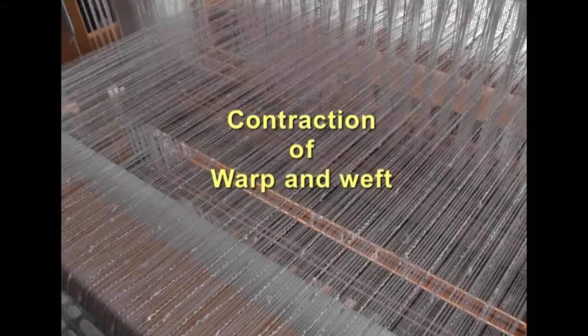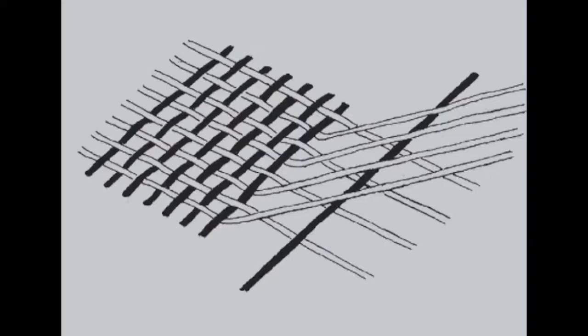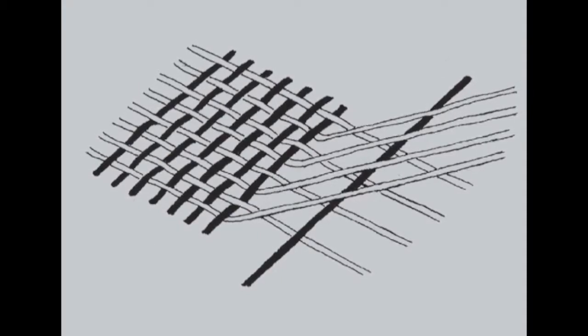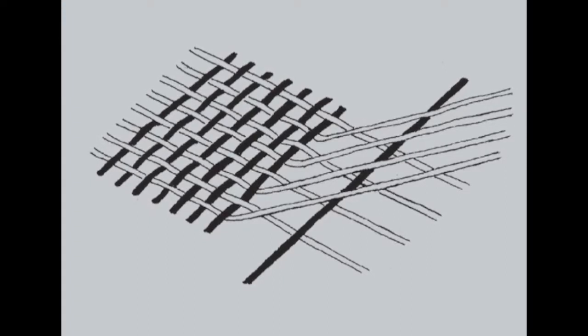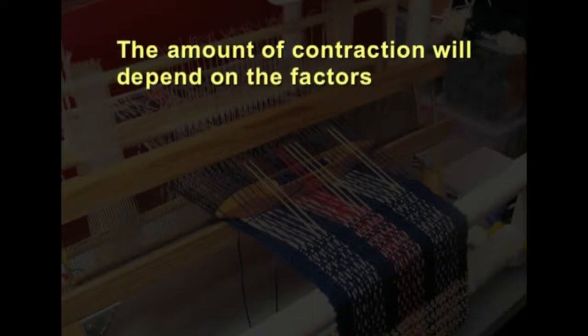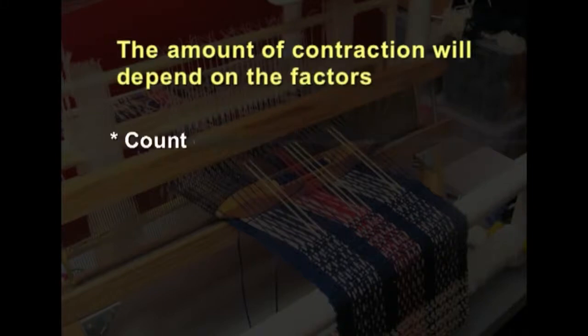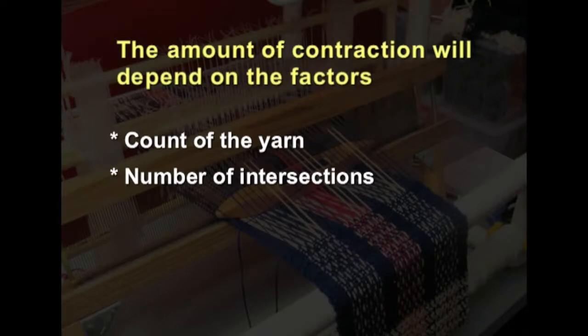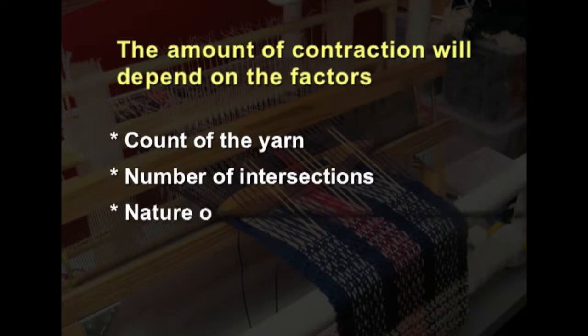First, we will consider the contraction of warp and weft. The cloth contains two sets of yarns which interlace with each other. Due to interlacement, the yarn bends slightly and thus the cloth produced is less than the length of the warp yarns. Even in the weft way, the width of the fabric will be less than the length of the weft yarns. The amount of contraction depends on factors such as count of the yarn — how fine or thick the yarn is — and the number of intersections: higher ends and picks will have more contraction.